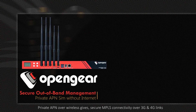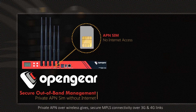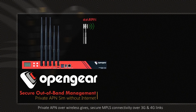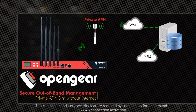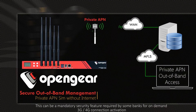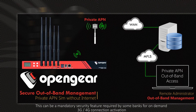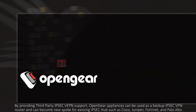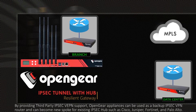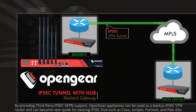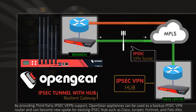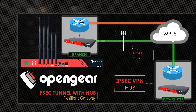Private APN over wireless gives secure MPLS connectivity over 3G and 4G links. This can be a mandatory security feature required by some banks for on-demand 3G and 4G connection activation. By providing third-party IPSec VPN support, the Open Gear Appliance can be used as a backup IPSec VPN router and can become a new spoke for existing IPSec hubs such as Cisco, Juniper, Fortinet, and Palo Alto.